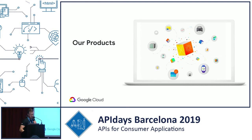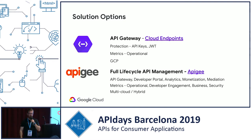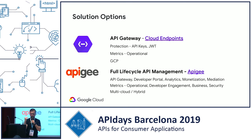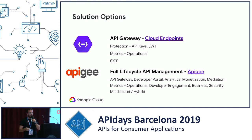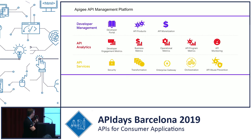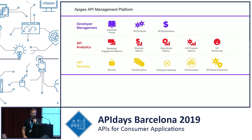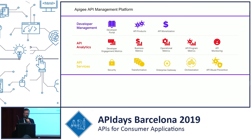If you want to know what solutions Google offers: we have API Gateway and Cloud Endpoints, which is a GCP experience with API key protection, JWT, and operational metrics. But for full lifecycle API management, Apigee provides a developer portal, analytics, monetization, business analytics, operational analytics, security, multi-cloud, and hybrid support. It has three layers: API services as the core runtime, an analytics layer with business analytics, API monitoring and tracing, and a developer management layer with the developer portal, API products, and monetization.